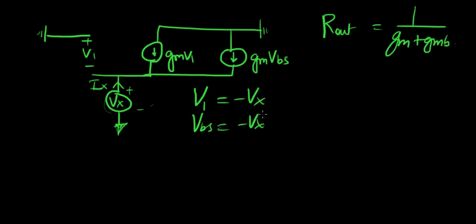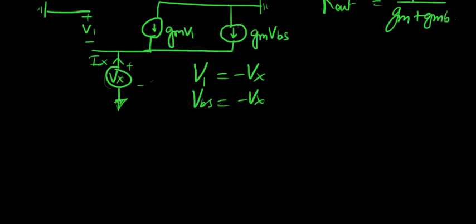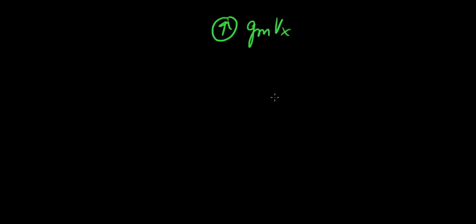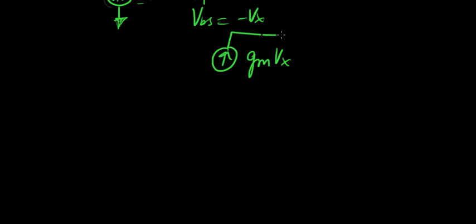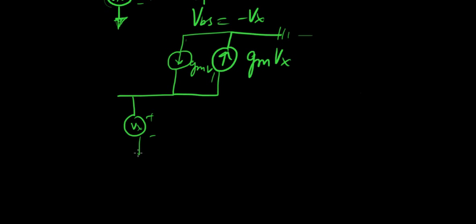So if we have to incorporate this into this current source right here, how would the small signal model look? Now, the only thing that will change here is the direction of the current if we have to show a positive GmVx there. That's all it is. So let me draw this right here again. I've got to do this real quick. GmV1, and here we have Vx, Ix, and here we have V1 again.